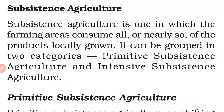Primitive subsistence agriculture and intensive subsistence agriculture. Subsistence agriculture को दो parts में divide किया जाता है — एक primitive subsistence agriculture होता है और एक intensive subsistence agriculture होता है।